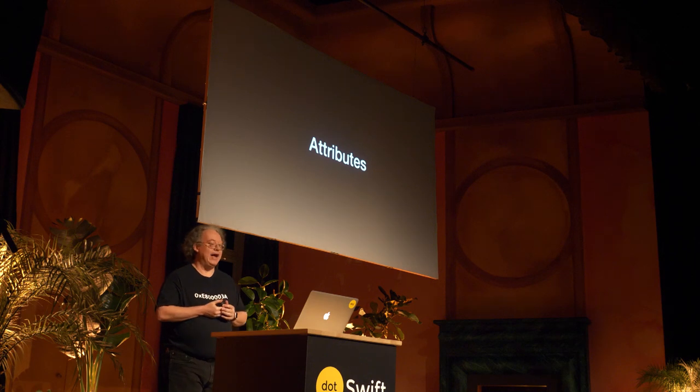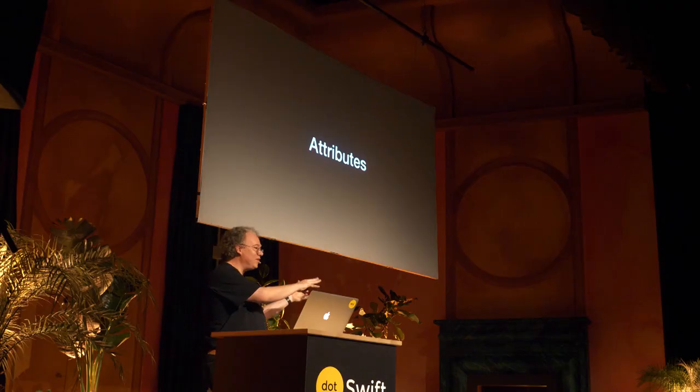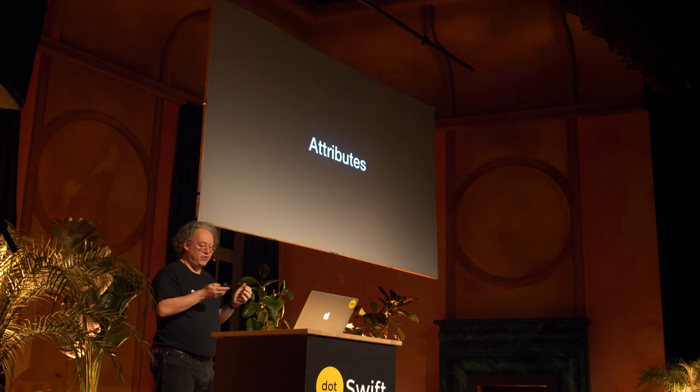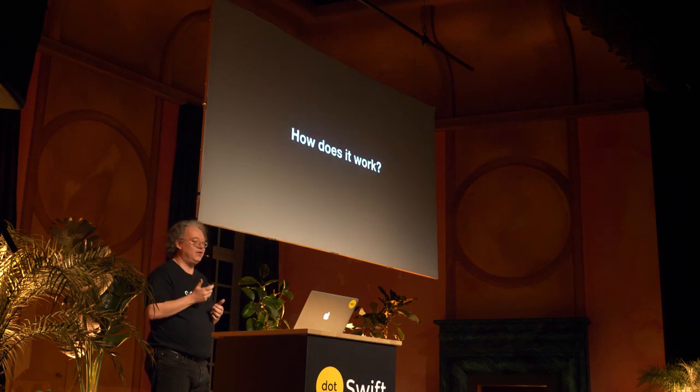And that, ladies and gentlemen, is pretty much it about attributes. There's a finite set of them, at least with the documented variety, and they're easy to work with. So I guess I have some time left. When I first got into Swift and was using attributes, the first thing that popped into my head was: how does it work? And anybody who knows me — this is the first question that always pops into my head. That's really cool. How does it work? It's my favorite question ever.